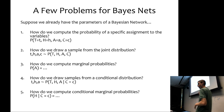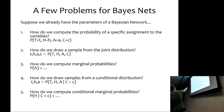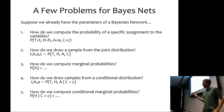We'll talk a lot about inference. Some important problems to solve once you have a Bayes net: How do we compute the probability for a specific assignment of variables? How do we draw a sample from the joint distribution? How do we compute the marginal probability of a specific random variable? How do we draw samples from a conditional distribution where we've observed some variables but not all? How do we compute conditional marginal probabilities?